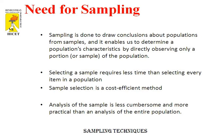Why do we need sampling? Sampling is done to draw conclusions about populations from samples, and it enables us to determine a population's characteristics by directly observing only a portion of the population. Sample selection is a cost-efficient method, and analysis of a sample is less cumbersome and more practical than analysis of the entire population. Hence, it is necessary to move for sampling.